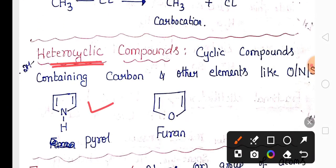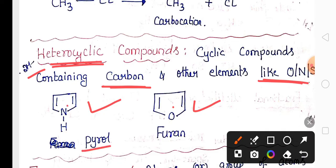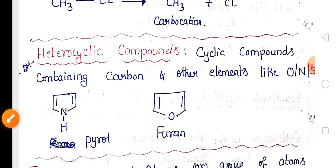The definition of heterocyclic compounds and their examples are important for two marks. In heterocyclic compounds, along with carbon, you can find other elements in the ring. Examples include pyrrole and furan.